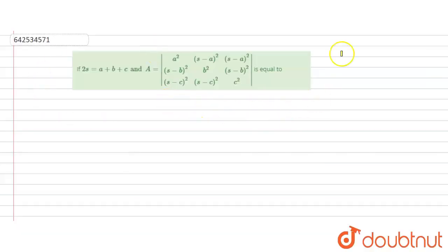Hello students, in this question we have: if 2s equals a plus b plus c, and we're given this determinant, then this determinant is equal to what? Let's start.